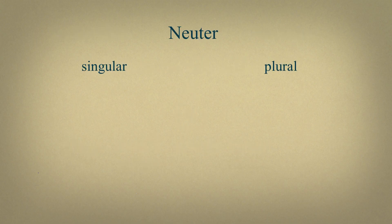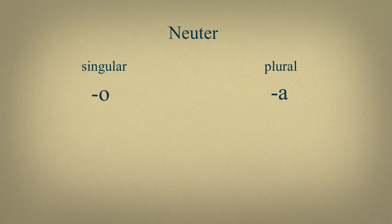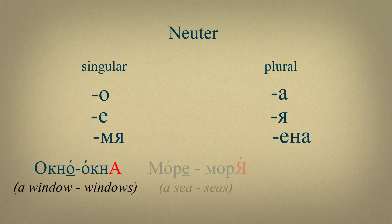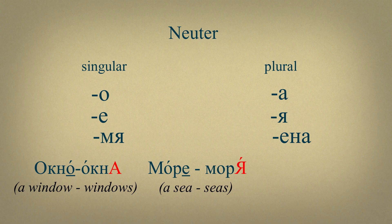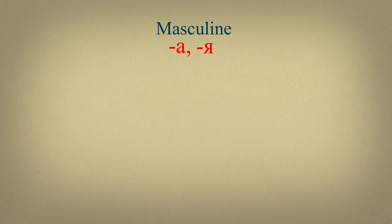As far as neuter gender is concerned, there is also a plural form. If a noun has an ending О, in plural form О changes to А. An ending Е changes to Я and an ending МЯ to an ending Мена. For example, окно, окна. Море, моря. Имя, имена.